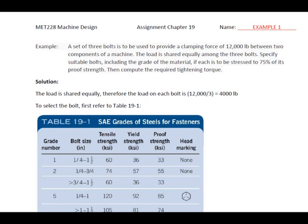It's very similar to the concepts you need for your homework assignment in Chapter 19. The problem statement is: a set of three bolts is used to provide a clamping load of 12,000 pounds between two components of a machine. The load is shared equally among the three bolts. Specify the suitable bolts, including the grade of the material, if each is stressed to 75% of its proof strength. Then compute the required tightening torque.